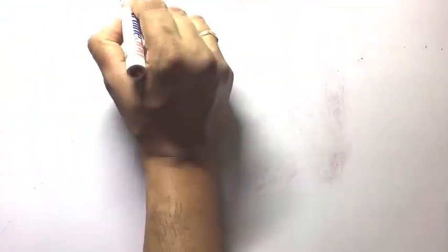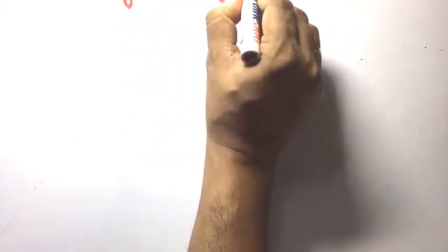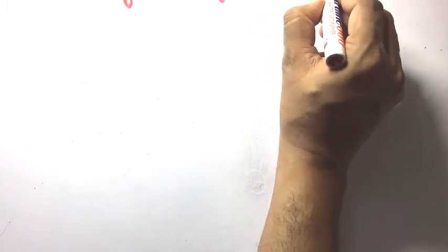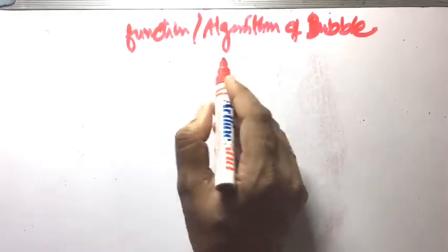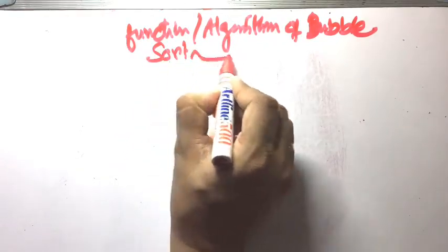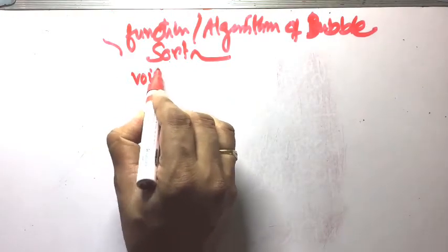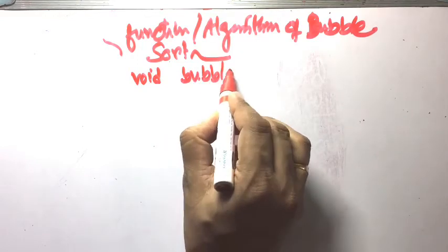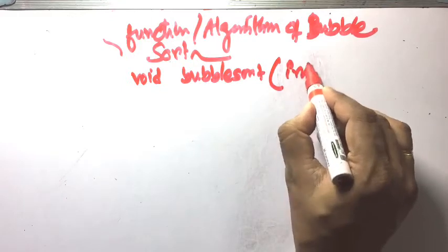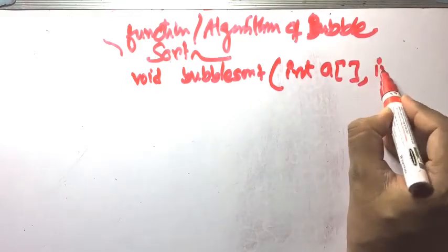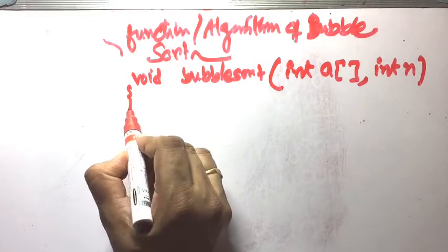Now the function or algorithm for bubble sort. The function is: void bubbleSort — void means it returns nothing. The parameters are: integer array a, which is the name of the array, and N, which is the number of elements. N is the number of elements, and now the body of the bubble sort function.